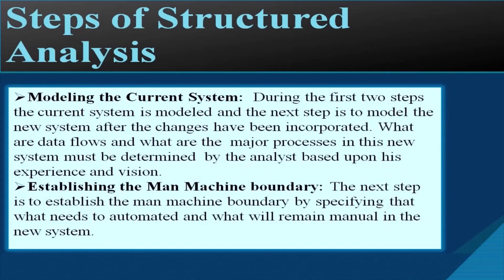The next step involves modeling the current system. During the first two steps, the current system is modeled, and the following step is to model the new system after changes have been incorporated. The analyst must determine the data flows and major processes in the new system based on experience and vision. The last step is to establish the man-machine boundary — specifying what needs to be automated and what will remain manual in the new system.